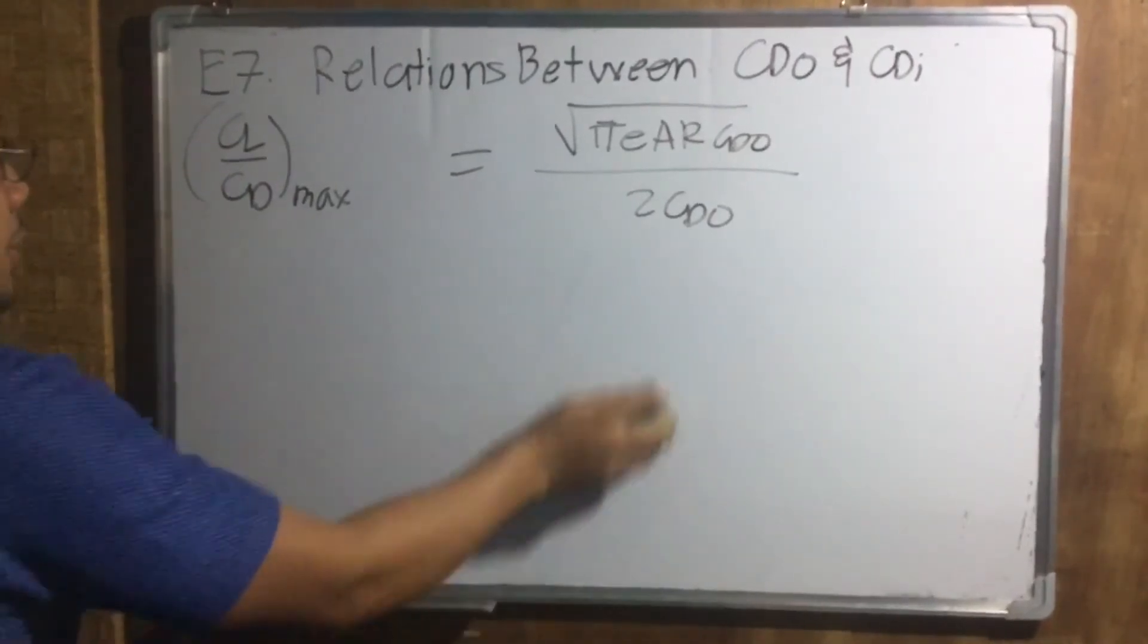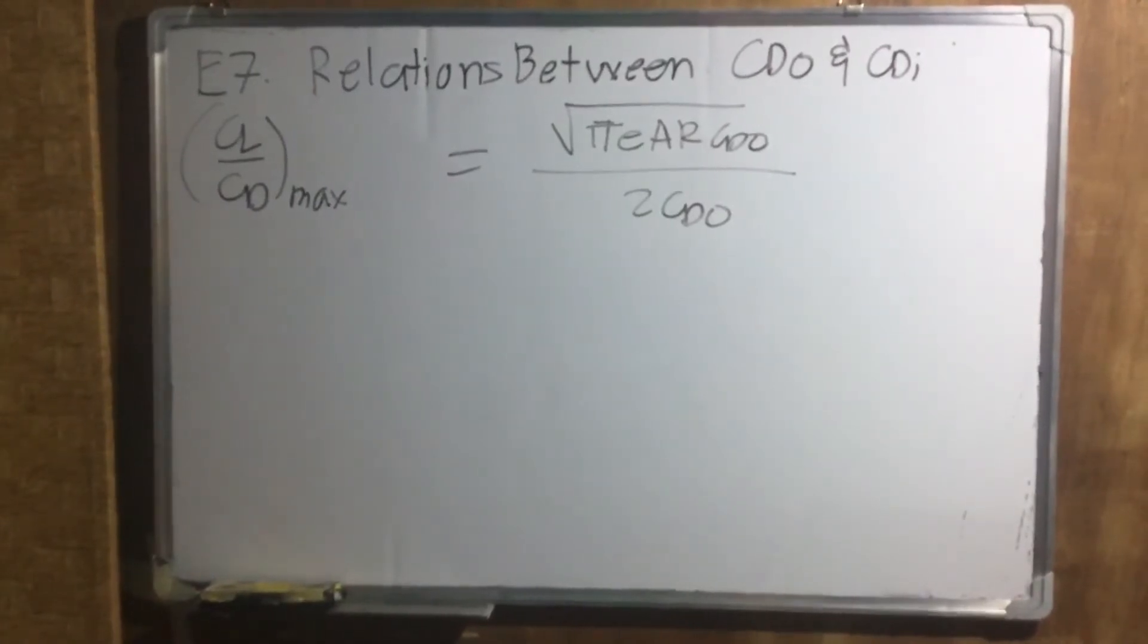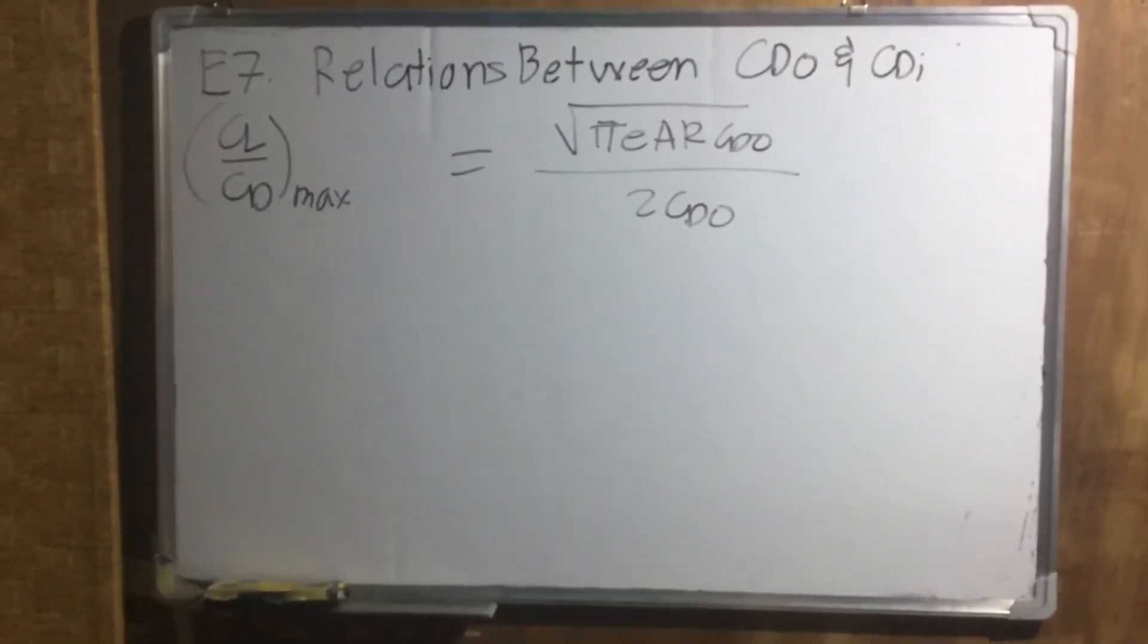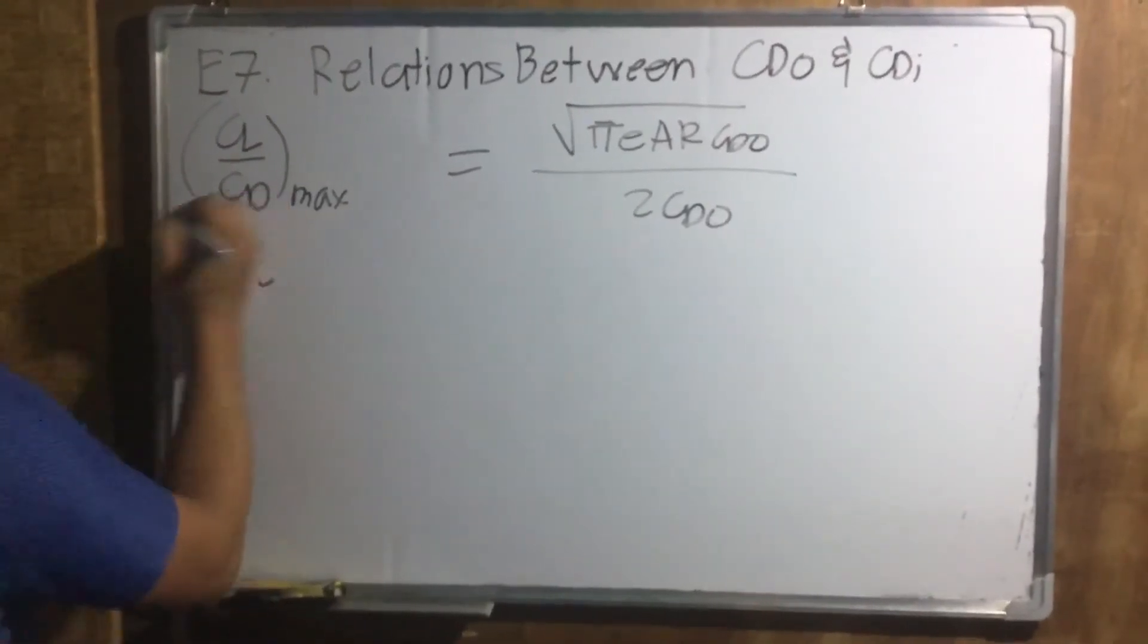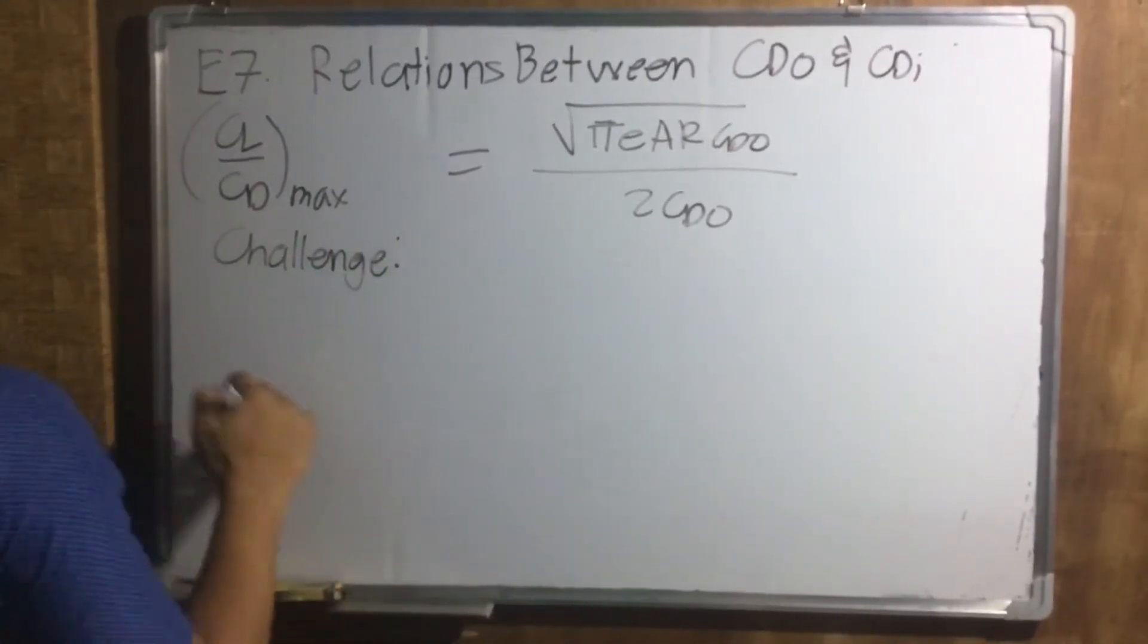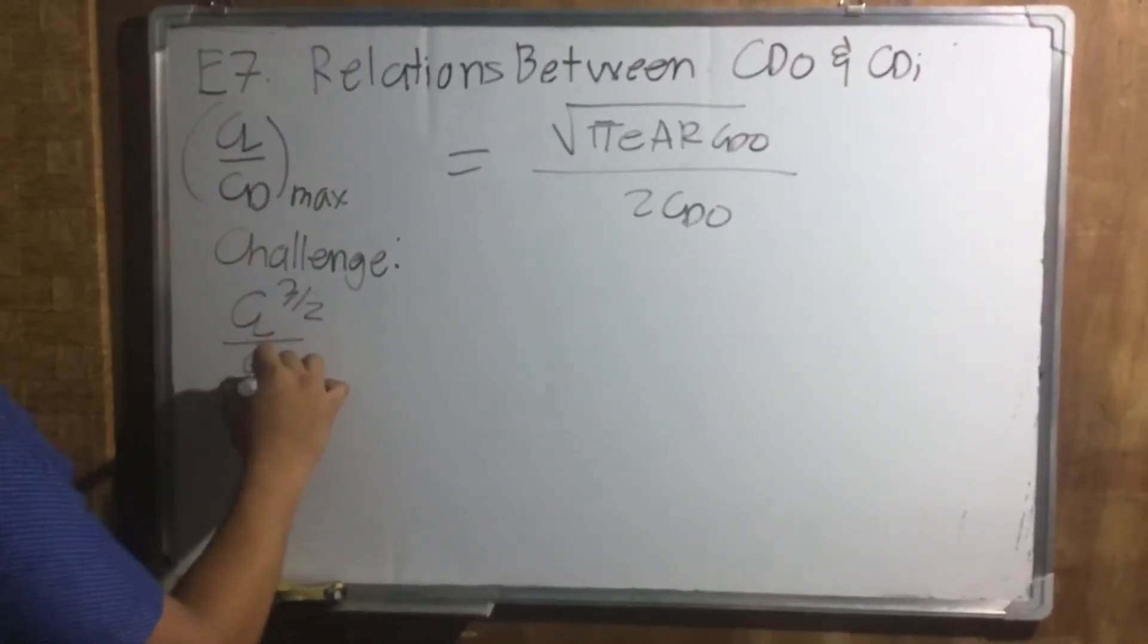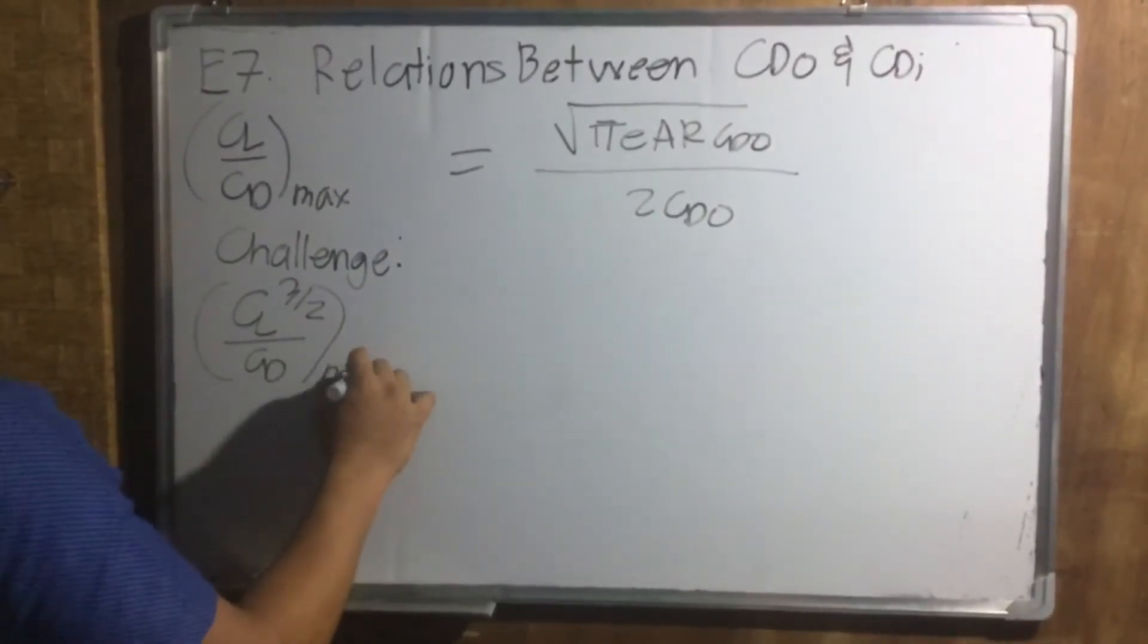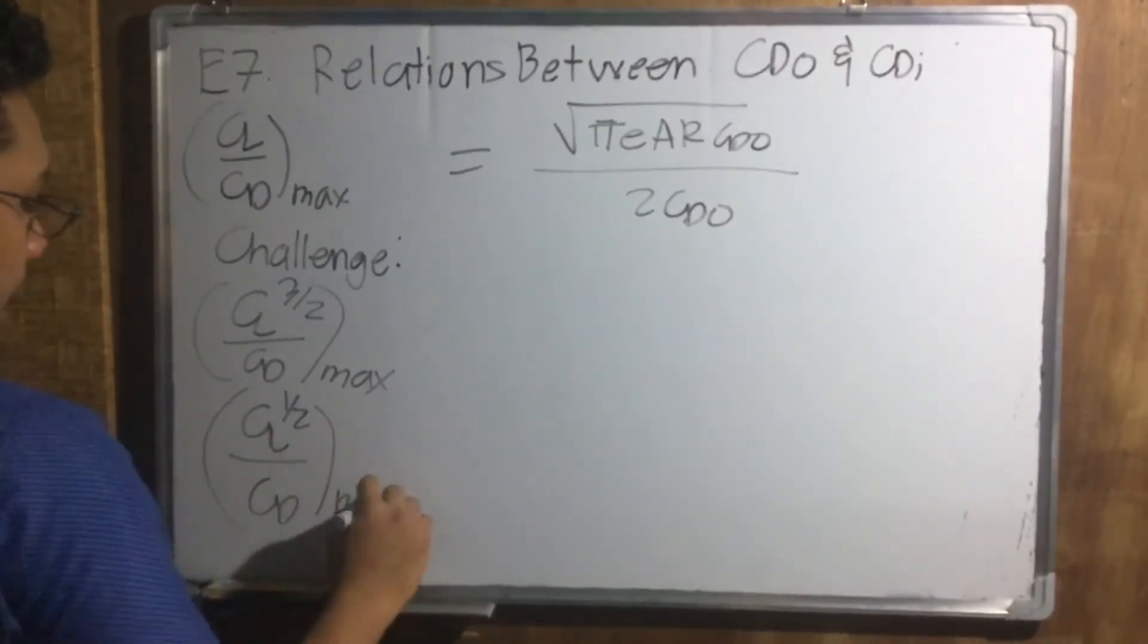My challenge to you is to derive the CL three halves over CD maximum, CL three halves over CD max. And CL one half over CD max.